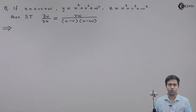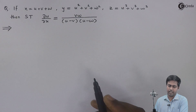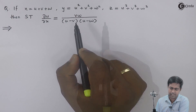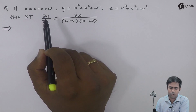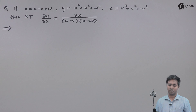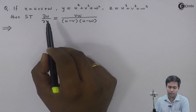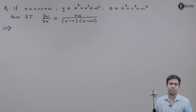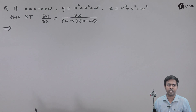If we try to use the definition of partial differentiation, to find ∂u/∂x we would require u in terms of x. However, u is not given in terms of x — rather x, y and z are given in terms of u, v and w. So finding ∂u/∂x is quite difficult since we don't have u explicitly. We'll make use of partial derivatives using Jacobians to get ∂u/∂x even if u is not given in terms of x.